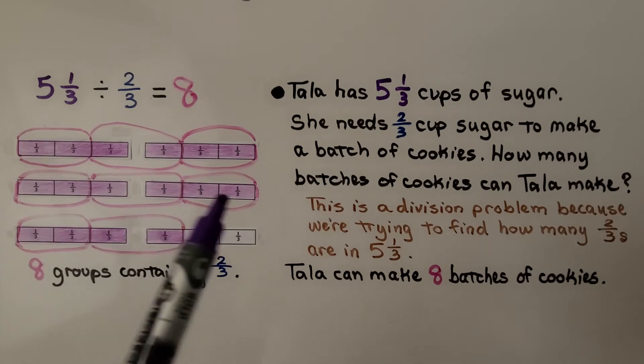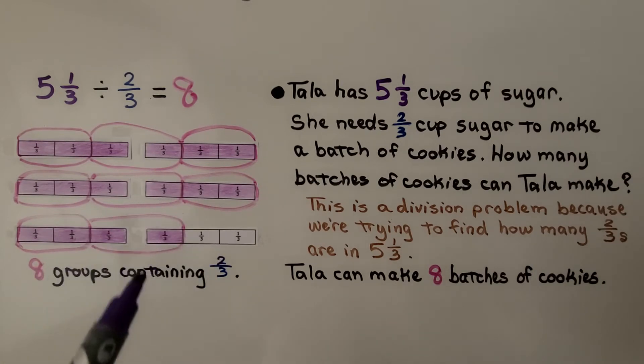And we can count the groups. There's 1, 2, 3, 4, 5, 6, 7, 8 groups containing ⅔. She can make 8 batches of cookies.